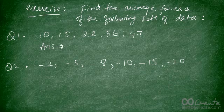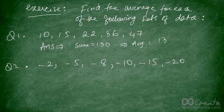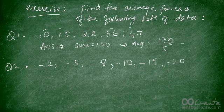When you add them up, your sum is going to be 130. So your average is going to be 130 divided by 5 — there are 5 terms — and that gives you 26 as your answer.